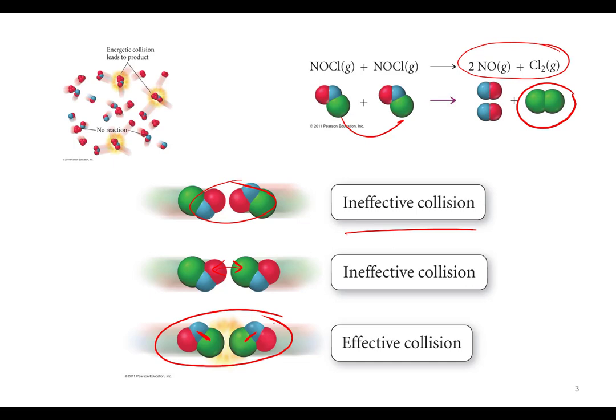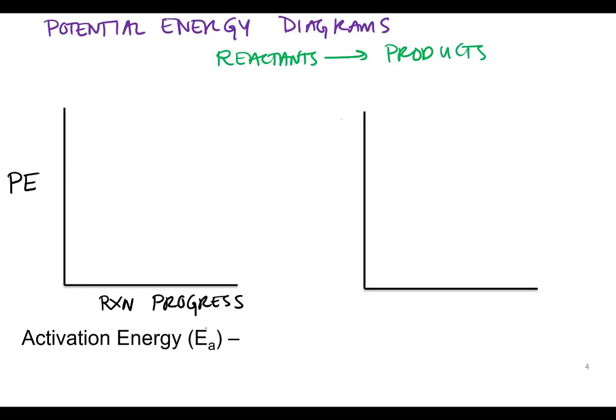Looking back at the reaction between two NOCl molecules producing two NO and Cl₂ — as these molecules are colliding, it's not an instantaneous process. As the chlorine atoms collide, their orbitals start to overlap and begin to form a covalent bond — there's a spectrum from when it starts to when it eventually forms. The bonds between the chlorine and nitrogen atoms also start to break; the bond length lengthens until the orbitals no longer overlap, and then that bond is broken. So there's a progression to reactions.